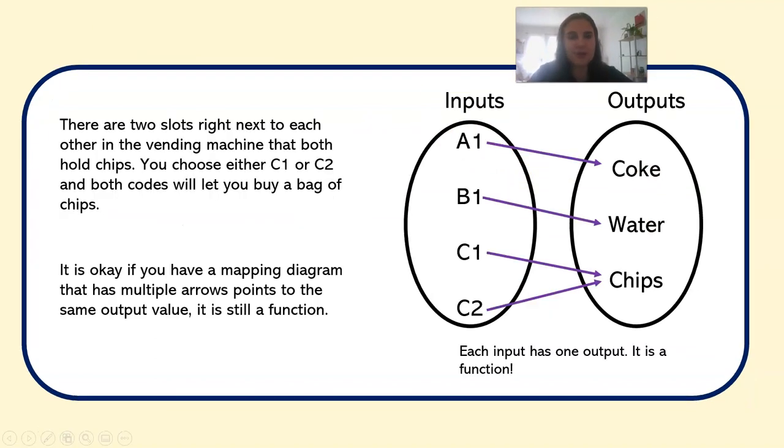So let's go back to the vending machine. Let's say there are two slots right next to each other in the vending machine that both have chips. So if I type in C1, I'm going to get a bag of chips. If I type in C2, I'm going to get a bag of chips also.